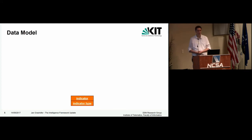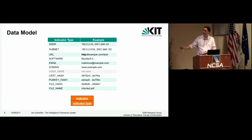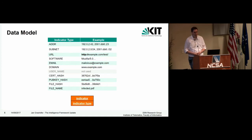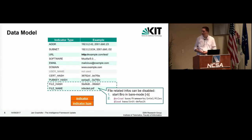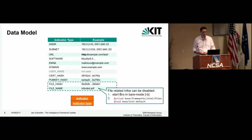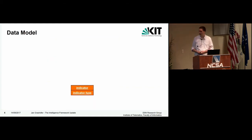The data model is all about indicators and their types — for example, addresses, hashes, and all that stuff. As a side note, there is also file-related stuff in the intelligence framework. If you're using the files framework you have that by default, but with the new Bro update you can also unload it and get rid of it.